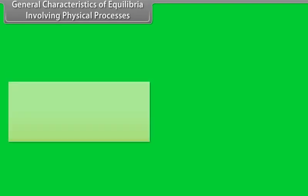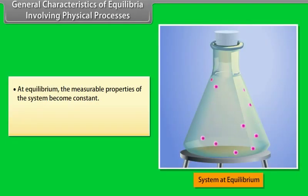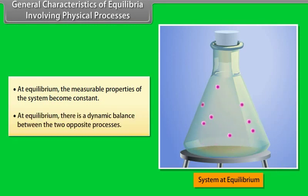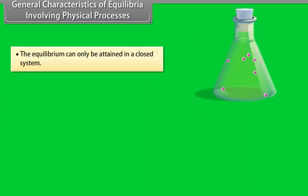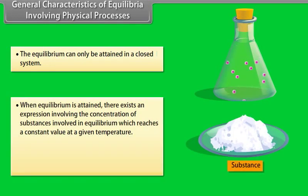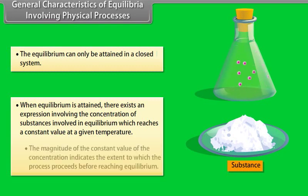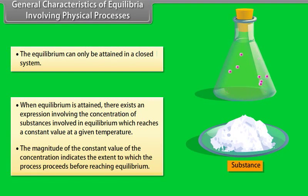General characteristics of equilibria involving physical processes: At equilibrium, the measurable properties of the system become constant. At equilibrium, there is a dynamic balance between the two opposite processes. Equilibrium can only be attained in a closed system. When equilibrium is attained, there exists an expression involving the concentration of substances which reaches a constant value at a given temperature. The magnitude of this constant indicates the extent to which the process proceeds before reaching equilibrium.